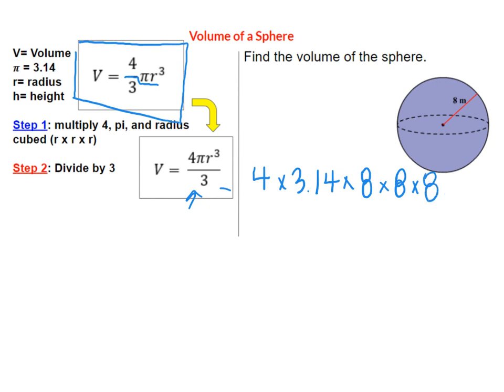Four times pi times eight times eight times eight will give you 6430.72. Okay then we want to go try step two.